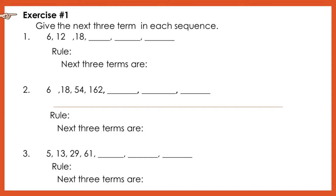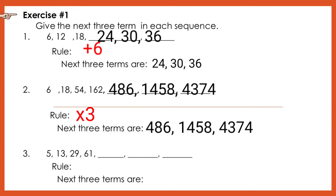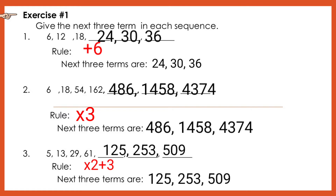Now, let us check your answers. Number one, the rule is add 6 or plus 6. The next three terms are 24, 30, and 36. Number two, the rule is multiply by 3 or times 3. The next three terms are 486, 1458, and 4374. Number three, the rule is multiply by 2 plus 3 or times 2 plus 3. The next three terms are 125, 253, and 509. If you got it right, brilliant!